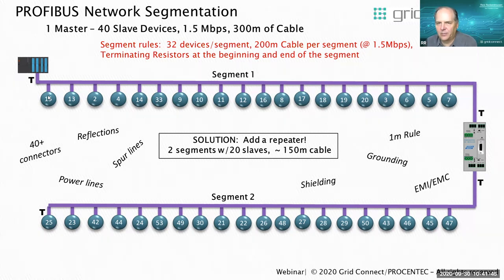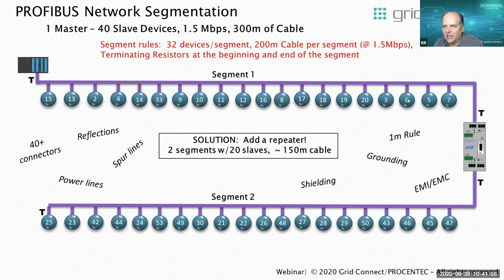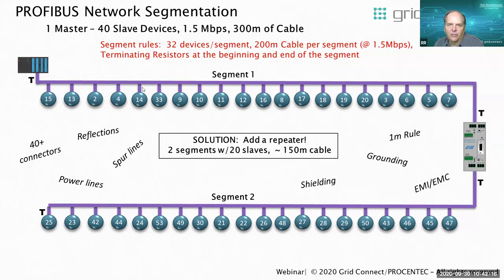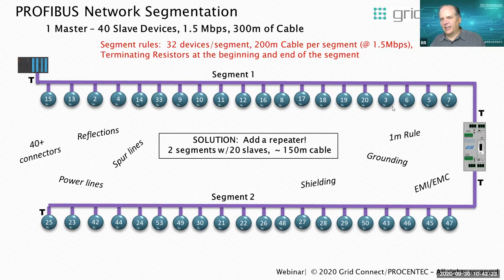The issue with big networks with long segments and a lot of devices is that if one device fails, the whole segment fails. Also confusing: if we have an error at address 13, the devices at the other end of the bus are the ones that will have problems, because the further away you are from the problem in PROFIBUS, the worse it gets. If you shorten those segments and get fewer devices per segment, you will have a more reliable and robust PROFIBUS network.